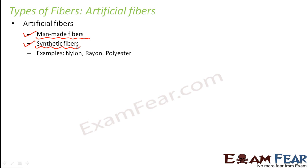Some examples of artificial fibers are nylon, rayon, and polyester. Nylon threads are often used in homes for drying clothes, and strong nylon ropes are used for rock climbing. Nylon is also used for making parachutes. Rayon and polyester are used for making different types of clothes and bed sheets, among many other applications.